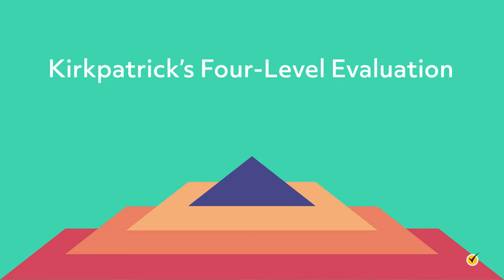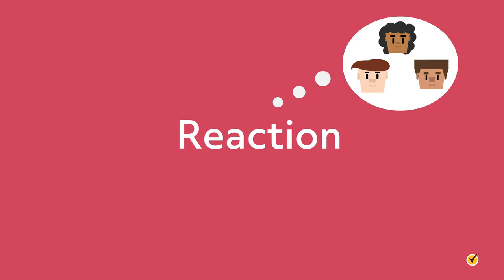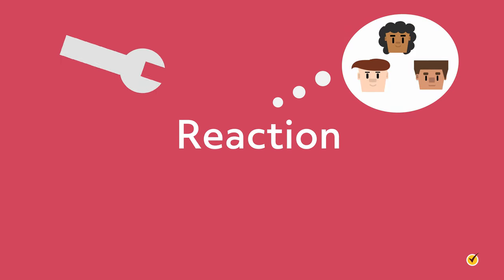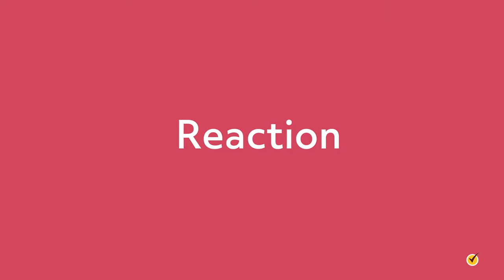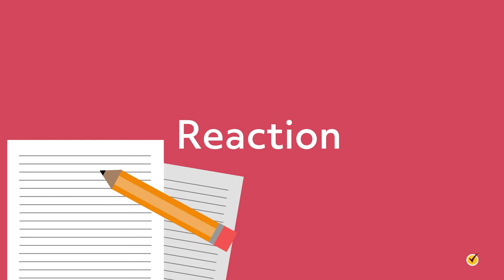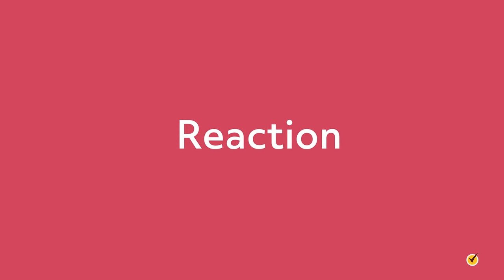We're going to examine each of those levels. Number one: reaction. This is where you gauge the audience's reaction to the training — was it well received? Will they be applying what they learned to their work practices? These questions can easily be placed in a survey, but there is also verbal and non-verbal feedback that instructors should watch for. Once responses and suggestions are received, prepare to take appropriate measures and make changes as necessary.